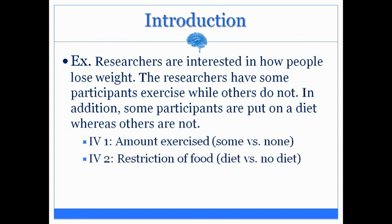The first independent variable was the amount exercised — individuals exercised some of the time or none of the time. Independent variable number two was that some individuals were placed on a restricted diet versus others who were not, so this can be considered the restriction of food. We have two independent variables: the amount exercised as well as the restriction of food — those are the two manipulations.